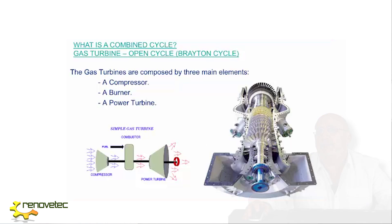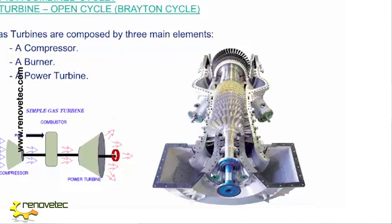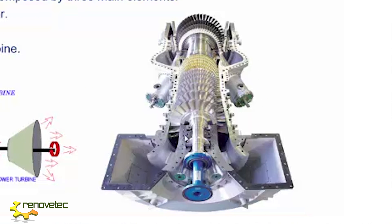The main component of a Combined Cycle is the gas turbine. The gas turbine is composed of three important parts. The first one is the compressor. The air comes in, and is compressed, so we obtain air with some pressure and some temperature.